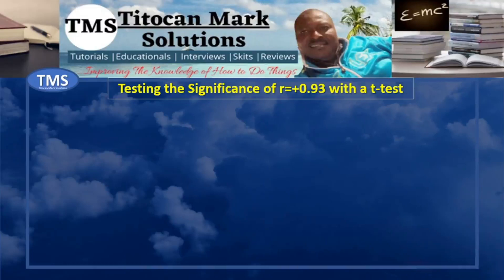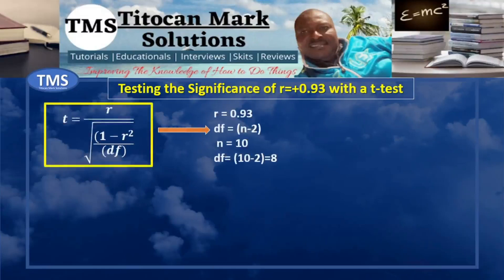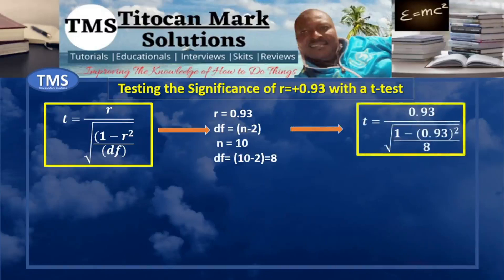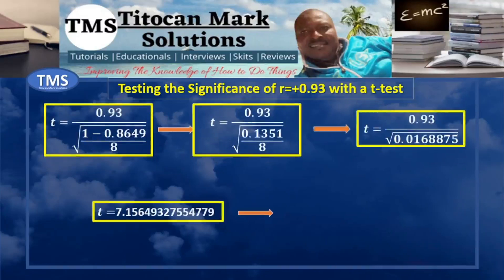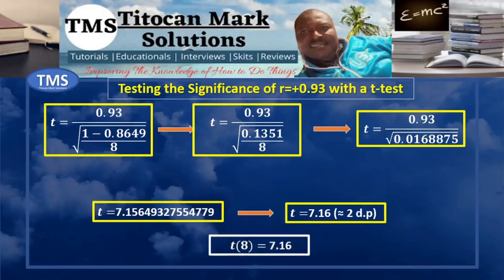Let's perform a t-test. The formula for the t-test is given as this. Since the variables are known — where r is the calculated Pearson's correlation coefficient and is 0.93, df is degrees of freedom given as n minus 2, where n is the number of fish weighed and is 8 — substitute the values into the t-test equation. When you solve the equation, you will get 7.16 as the t-value approximated to two decimal places. That is, at 8 degrees of freedom, the t-value is 7.16.